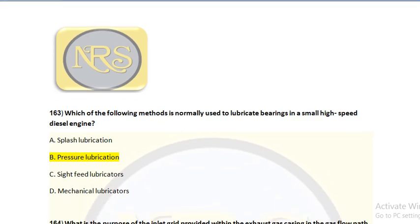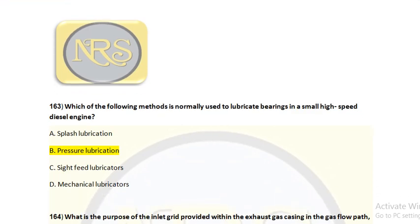Question number 163. Which of the following methods is normally used to lubricate bearings in a small high-speed engine? Option A, splash lubrication; option B, pressure lubrication; option C, side-feed lubricators; option D, mechanical lubricators. The correct answer is option B — pressure lubrication.